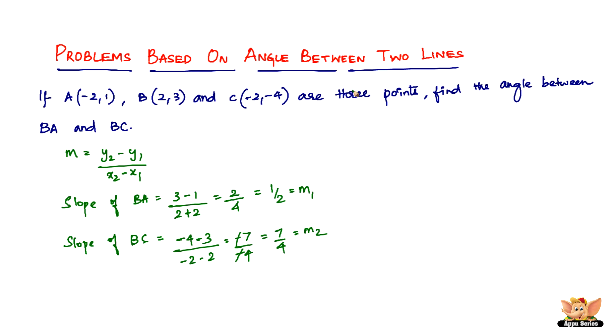So now we can go ahead and find the angle between these two lines with slopes m1 and m2. So we have tan theta equals mod of m2 minus m1, we are not considering the signs here, divided by 1 plus m1 m2. m2 is given by 7 by 4, m1 is given by 1 by 2 divided by 1 plus m1 is 1 by 2 times m2 is 7 by 4.